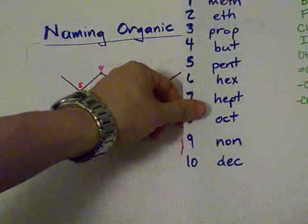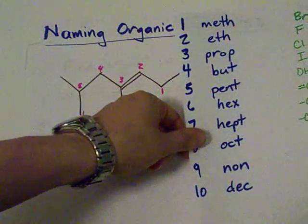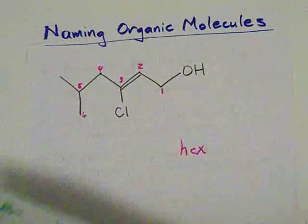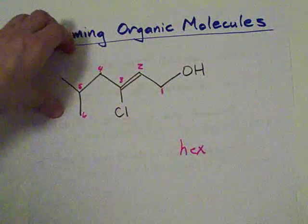I got that because I memorized this chart when I was a wee little boy. One is meth, two is eth, three is prop, whatever. Memorize it. Figure it out. Step one, find the longest carbon chain. That's the root hex. Done.